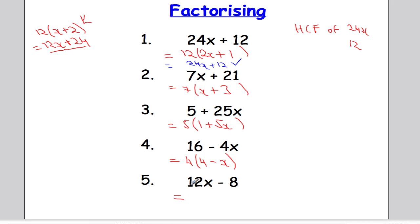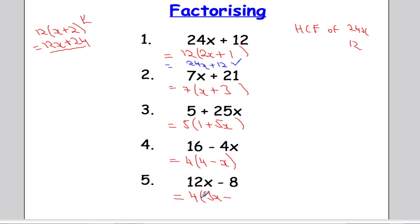Example number 5: the highest common factor of 12x and 8 — the biggest thing I can divide into both of those terms must be 4. What would I multiply 4 by to get 12x? It must be 3x. 4 times 3x is 12x. And again, we have a negative sign here, so I'm going to have a negative sign here. 4 multiplied by 2 will give me that 8.